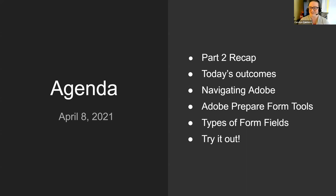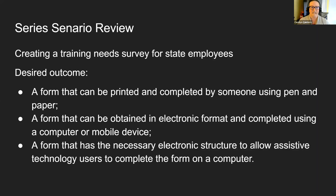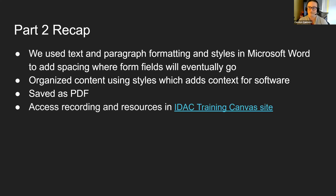We'll have time at the end to try it all out. As a quick review for this series, we are going with this scenario: we need to create a training needs survey for state employees. Our desired outcome is threefold — a form that can be printed and completed with pen and paper, a form that can be completed electronically on a computer or mobile device, and a form with the necessary electronic structure to allow assistive technology users to complete it with the assistive technology of their choosing.